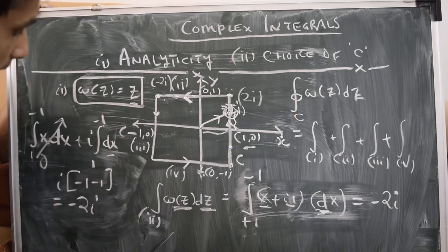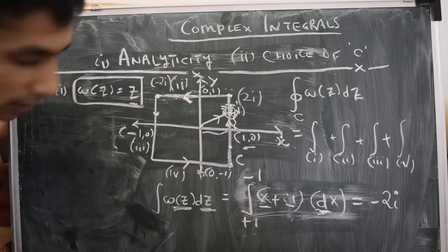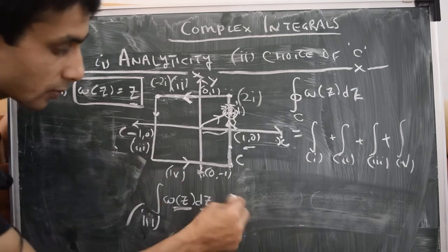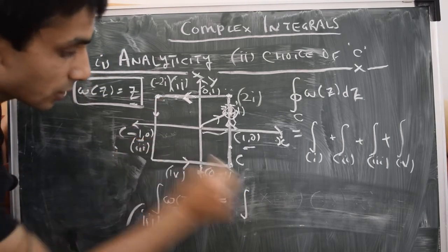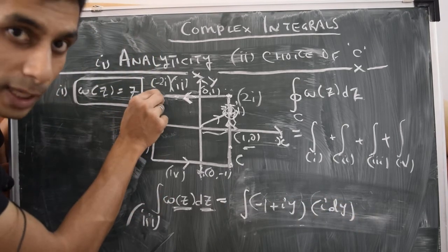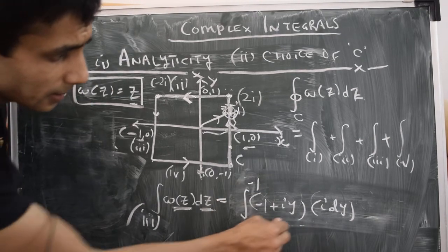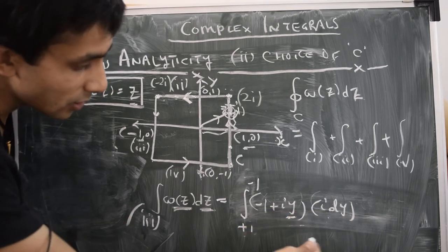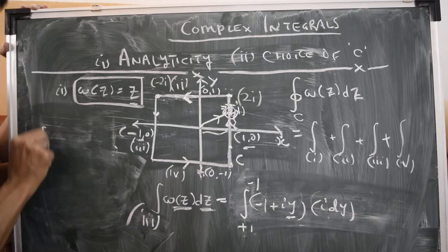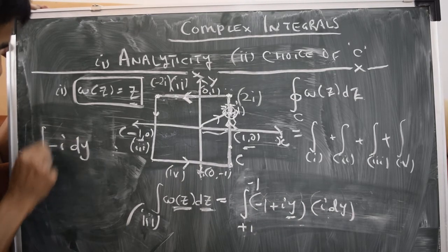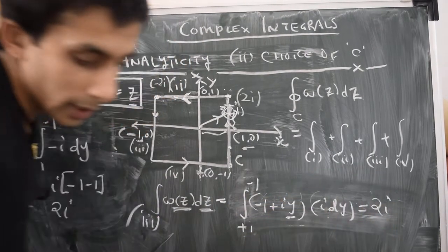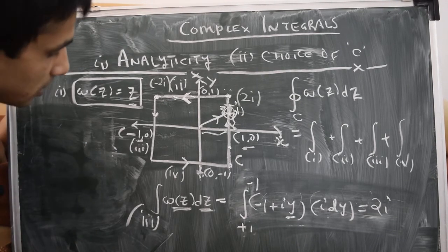Along path 3, x is fixed at -1 and y varies. So W(z) = -1 + iy and dz = i dy, with y going from +1 to -1. The term involving i²y dy vanishes, and the remaining term gives -i∫dy from 1 to -1 = -i(-1-1) = 2i. So the integral along path 3 is 2i.